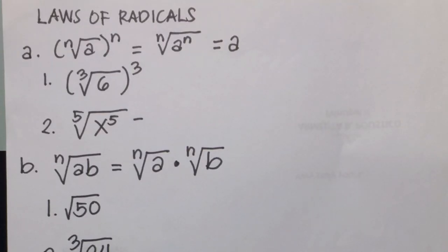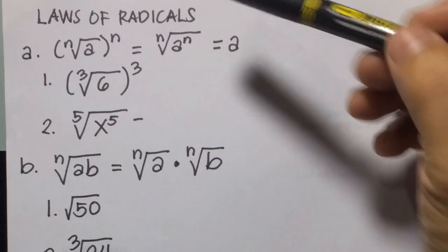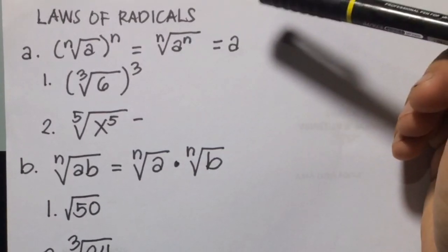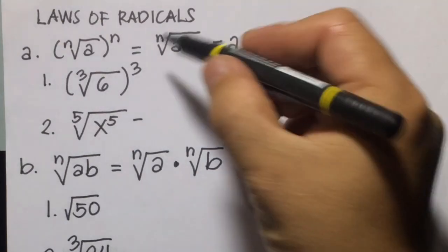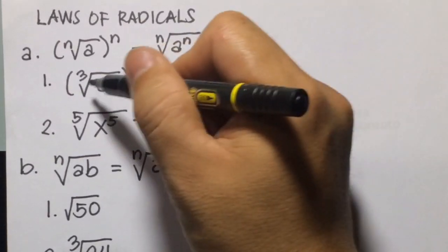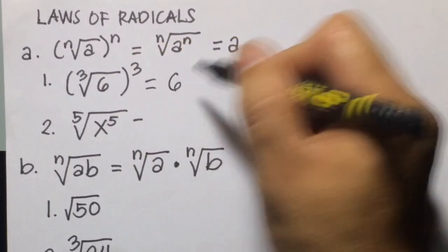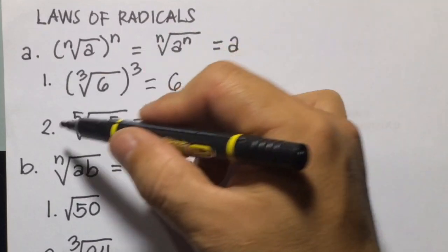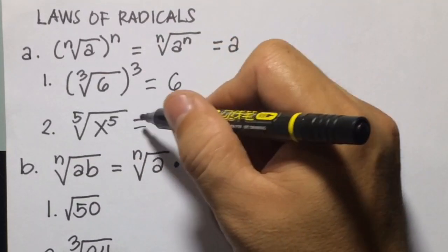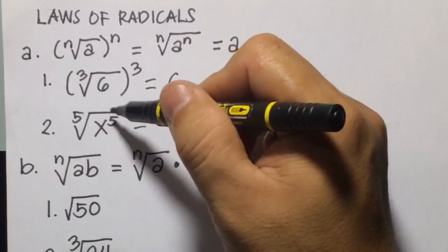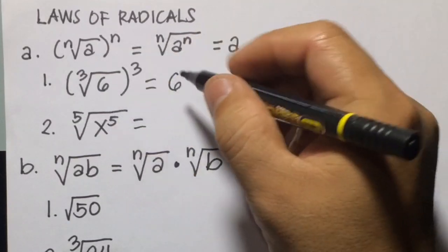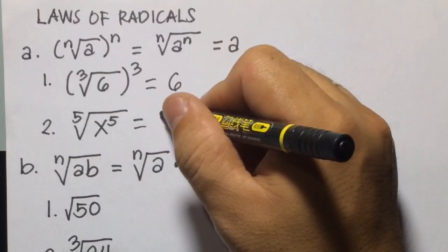First law: the nth root of a raised to the power of n is equal to a. So example number 1, cube root of 6 cubed — applying this law, this is just equal to 6. Then number 2, fifth root of x to the power of 5 — we have the same index and power, so the answer is x.